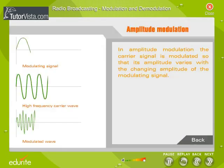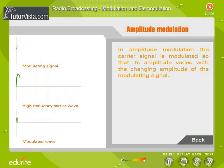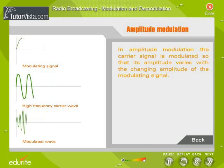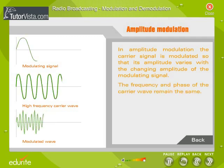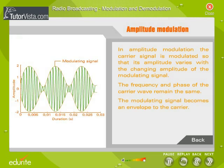Amplitude Modulation: In amplitude modulation, the carrier signal is modulated so that its amplitude varies with the changing amplitude of the modulating signal. The frequency and phase of the carrier wave remain the same. The modulating signal becomes an envelope to the carrier. The main drawbacks of AM are noisy reception, low efficiency, and lack of audio quality.